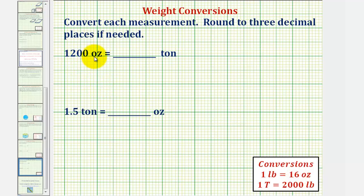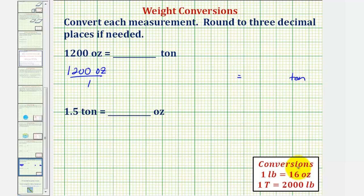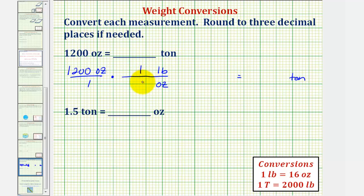To convert 1,200 ounces to tons, we'll begin by writing 1,200 ounces in fraction form — 1,200 ounces over 1 — which we want to convert to tons. Looking at our conversions, notice how we'll first convert ounces to pounds and then pounds to tons. To convert ounces to pounds, we'll multiply by a unit fraction where, because we have ounces in the numerator, we'll put ounces in the denominator so that ounces will simplify out and we'll have pounds in the numerator. Our conversion is 1 pound equals 16 ounces.